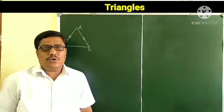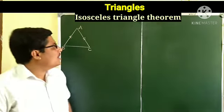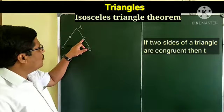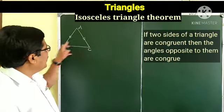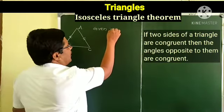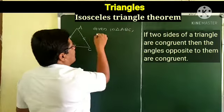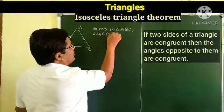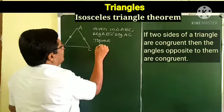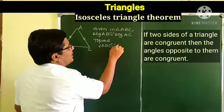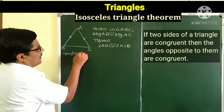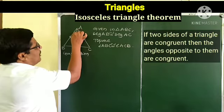In this video we are going to learn some theorems. The first theorem is the Isosceles Triangle Theorem. The statement is: if two sides of a triangle are congruent, then the angles opposite to them are congruent. Given in triangle ABC, segment AB is congruent to segment AC. We have to prove angle ABC is congruent to angle ACB.